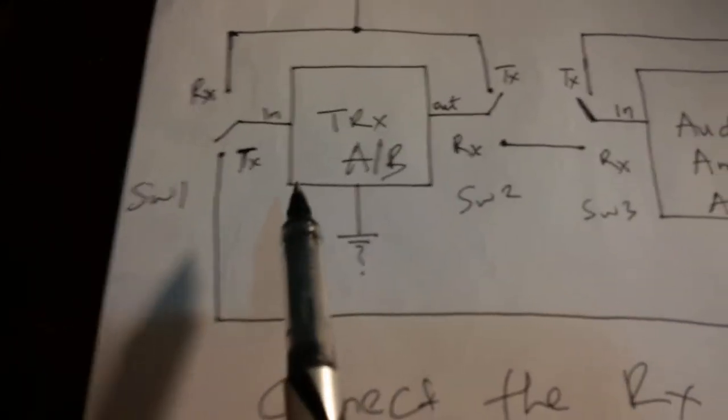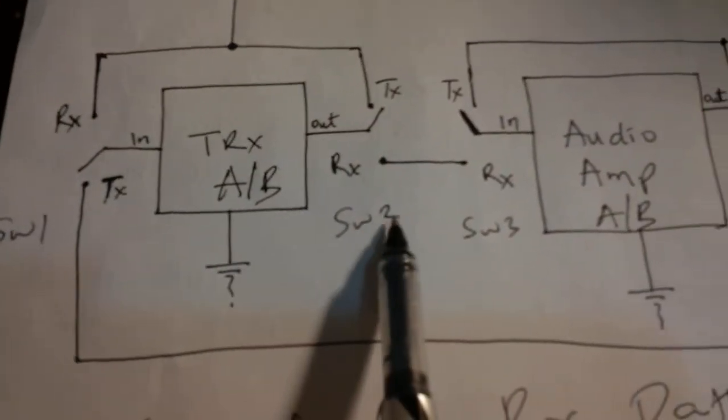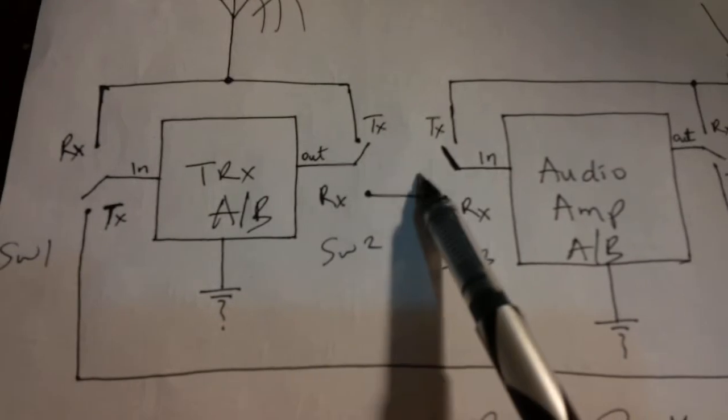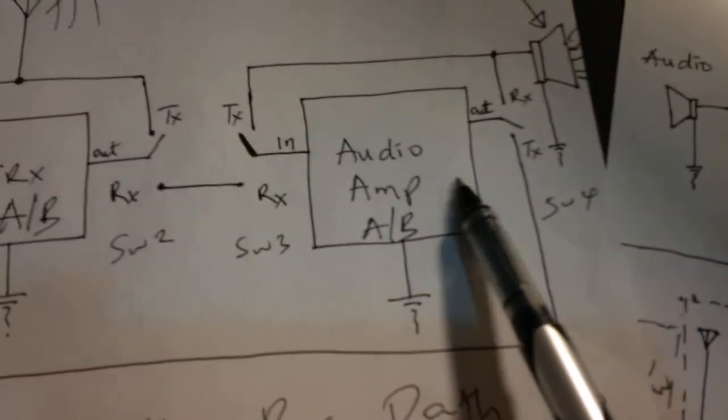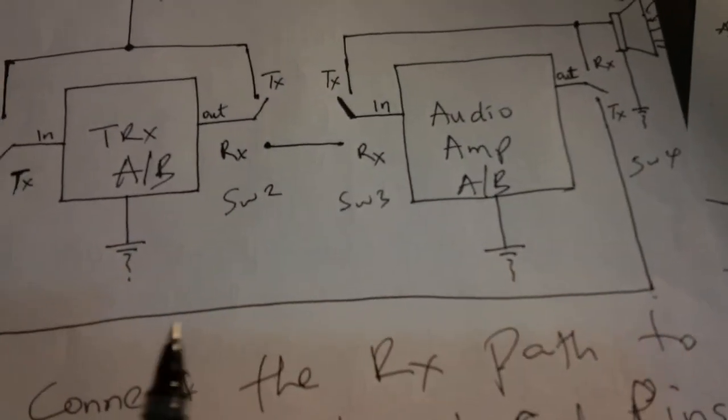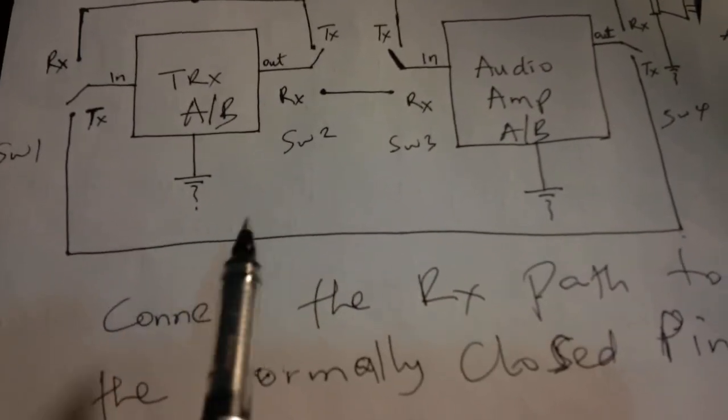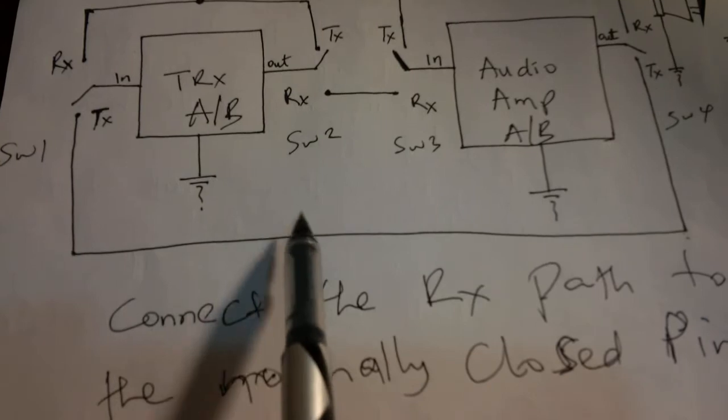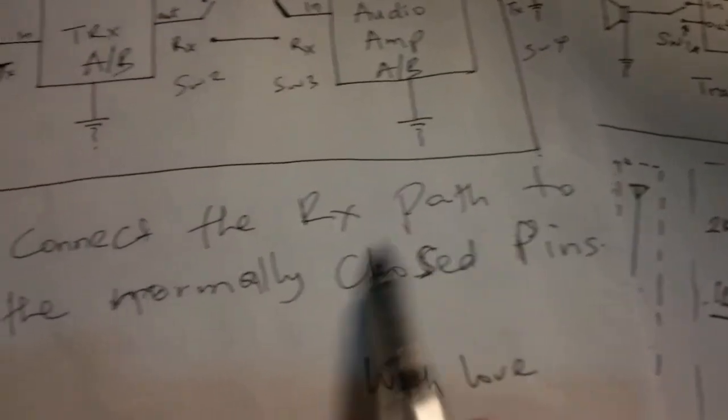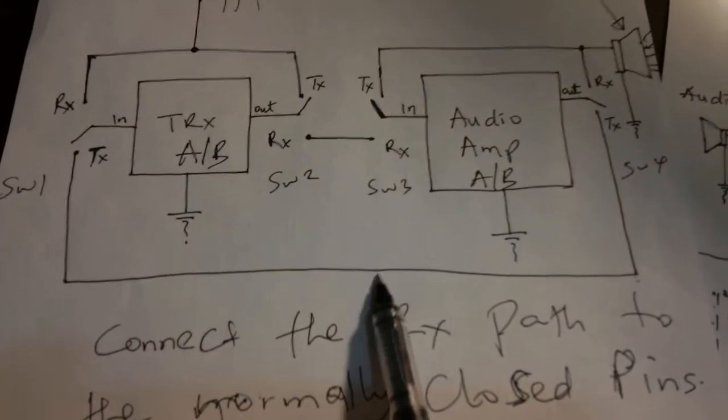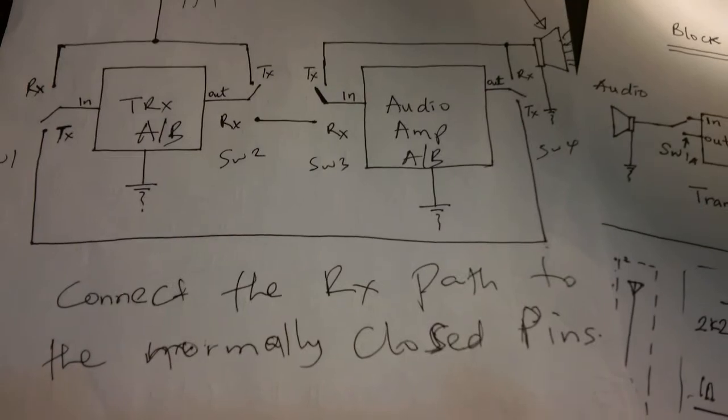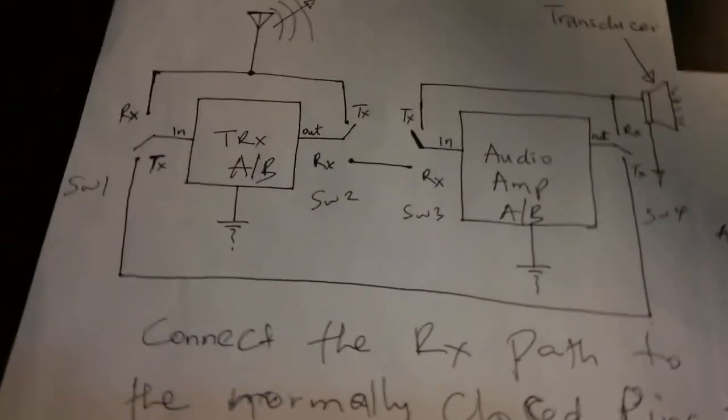Now, let's look here again. There are four switches. There's one switch here, a second switch, a third switch, and a fourth switch. And each switch has three terminals. So, your switch should have 12 pins. Connect the RX path of your switch to the normally closed pins. This ensures that your transceiver is always ready to receive at all times. You will only switch to transmit path when you want to really transmit something.